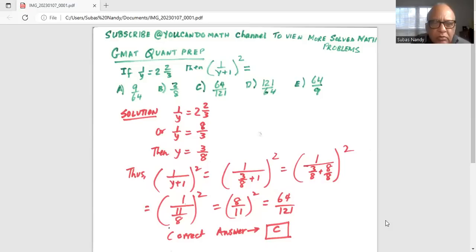If 1 over y is 2 and 2 thirds, then 1 over y plus 1 whole squared is equal to what? And there are 5 options.